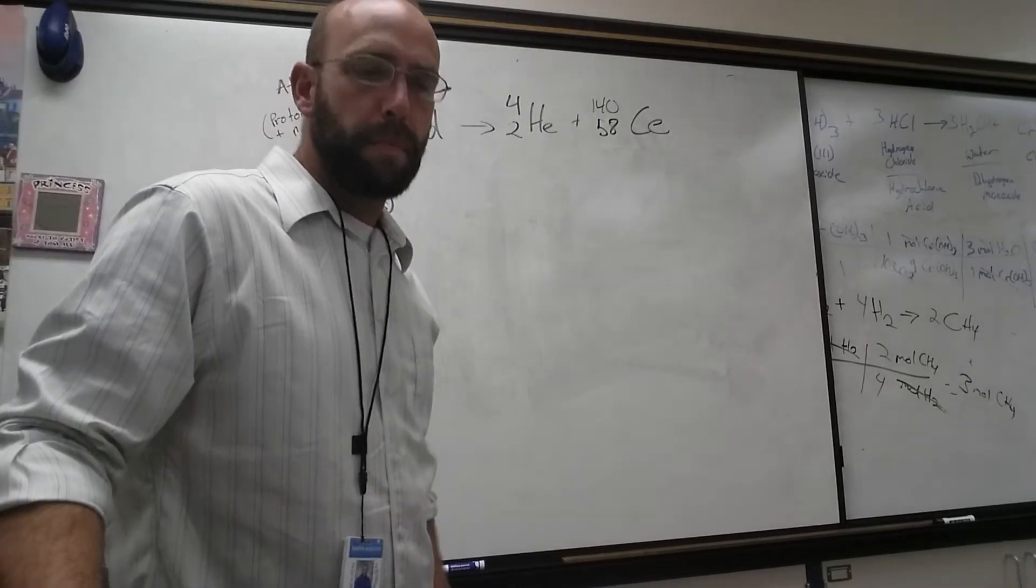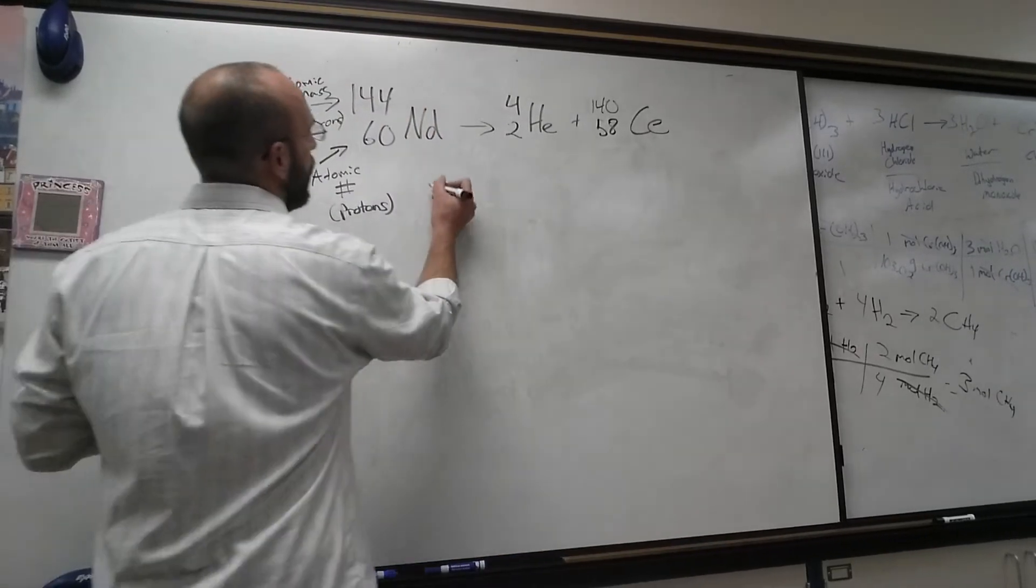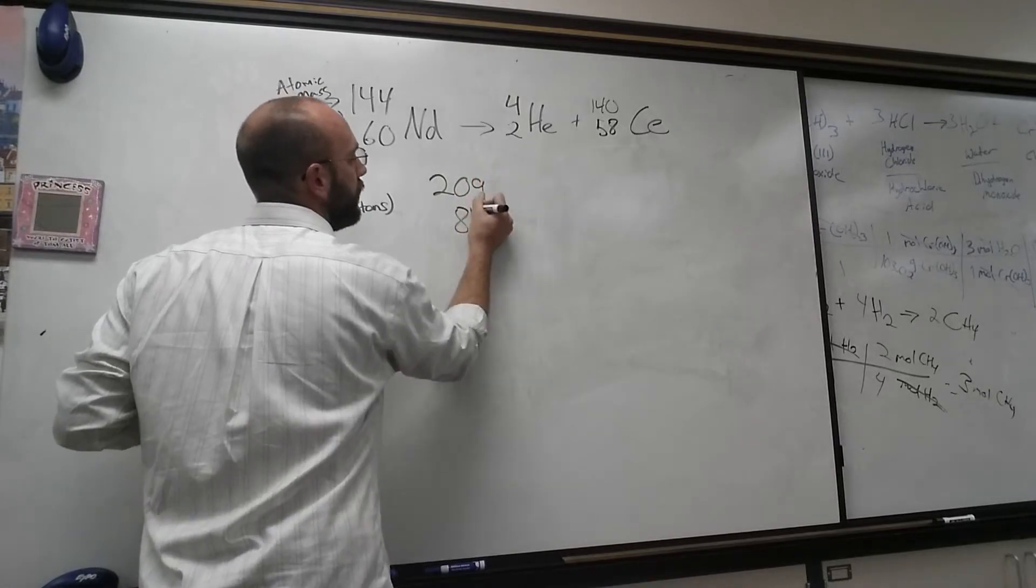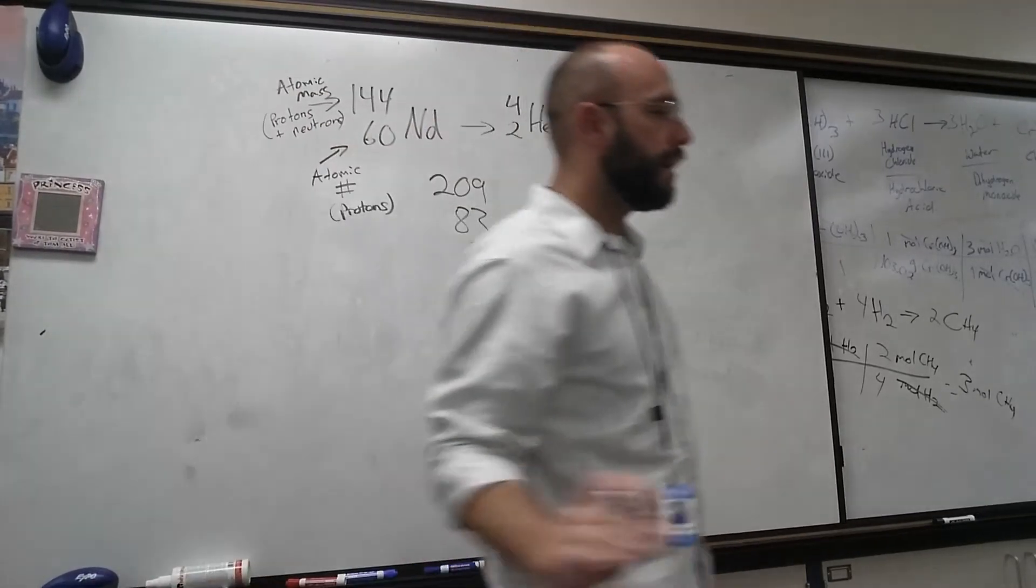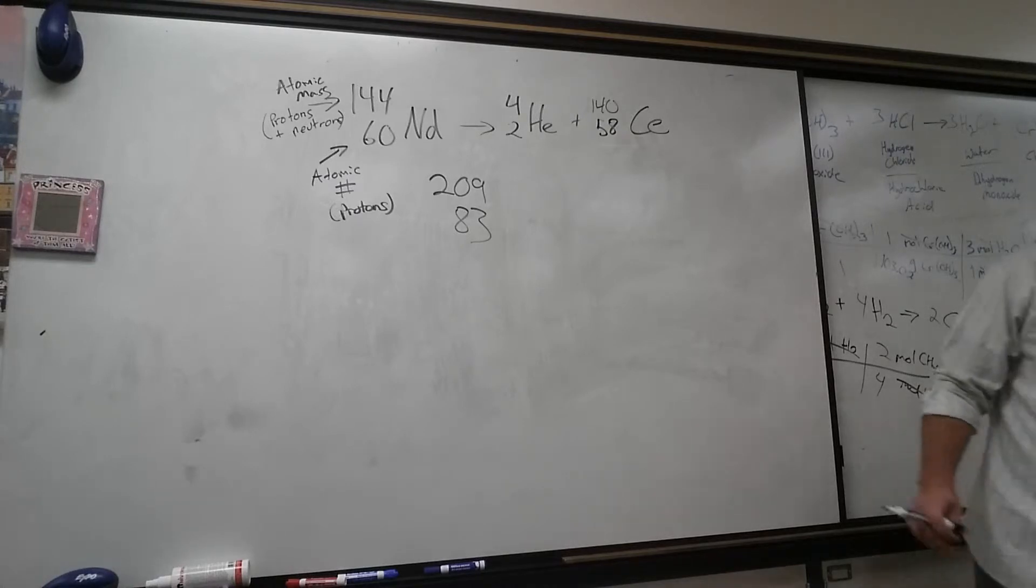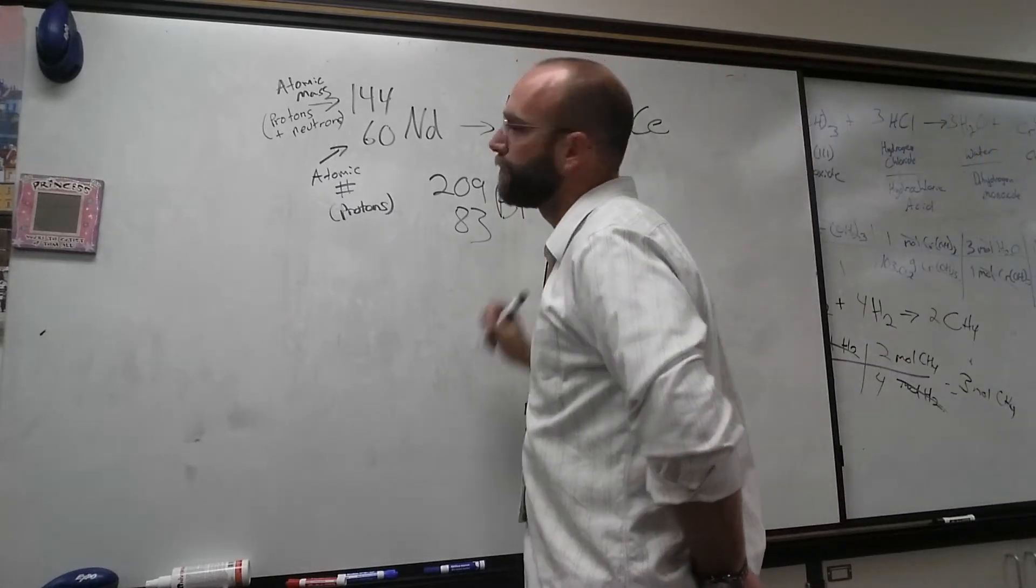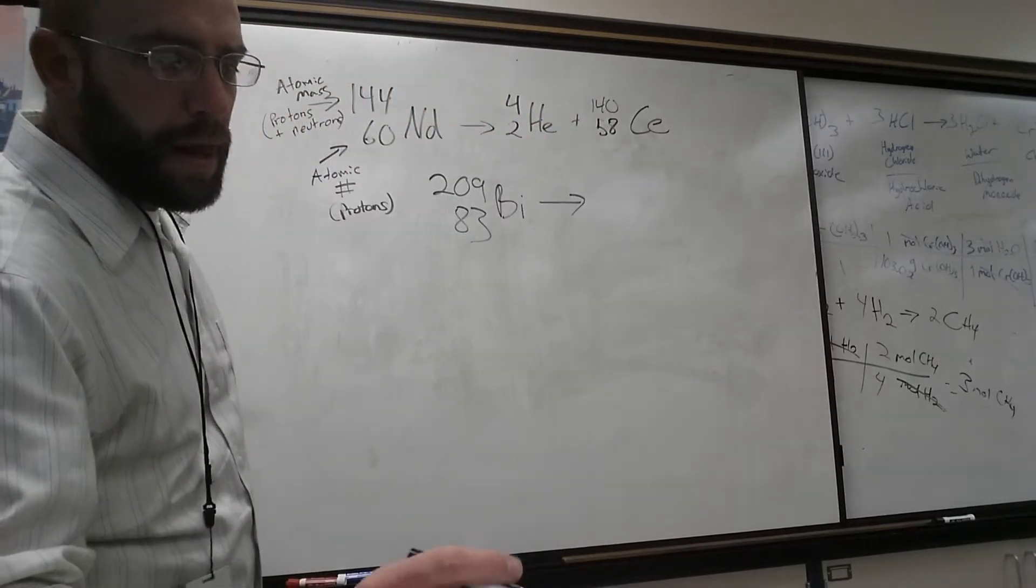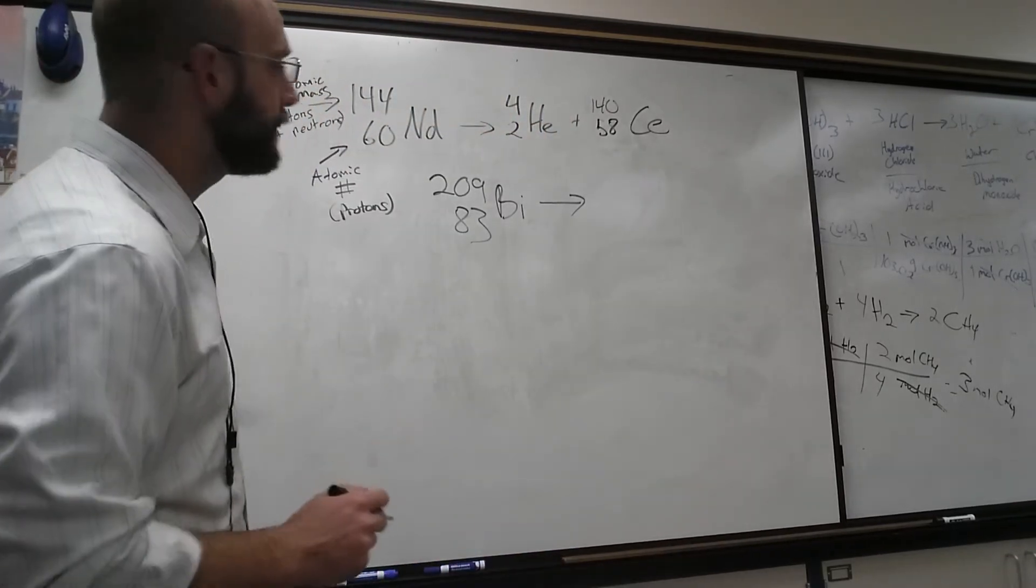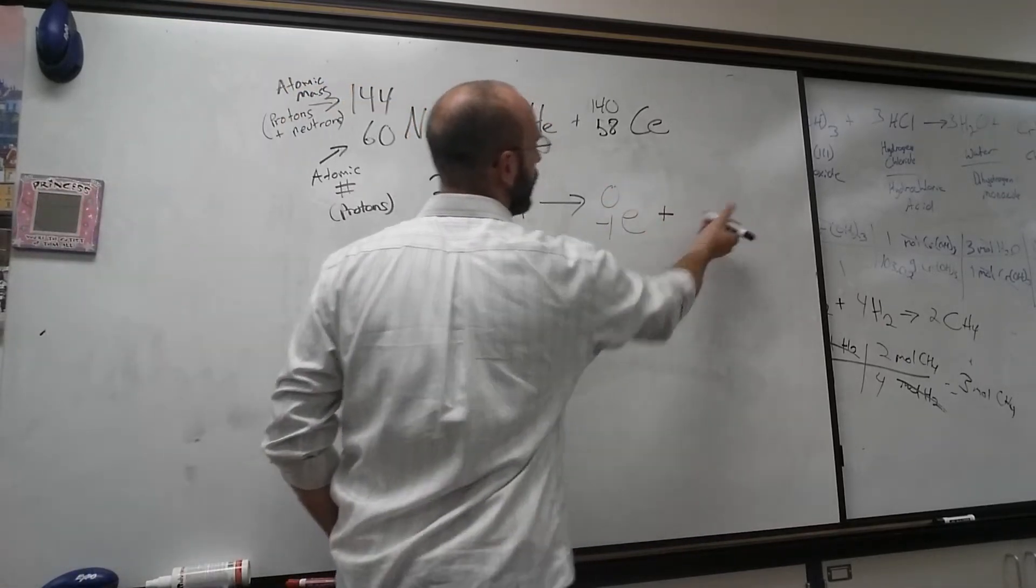We are now able to figure out what element is going to be left standing after that decay. Cerium is released with an alpha particle. Now we're going to do the second example: 209-83 bismuth, Bi. We're going to be releasing 0, negative 1, E, a beta particle. And again, we have a blank.